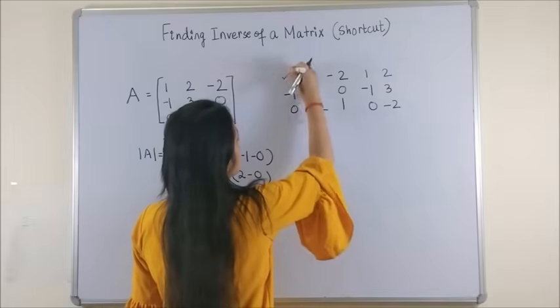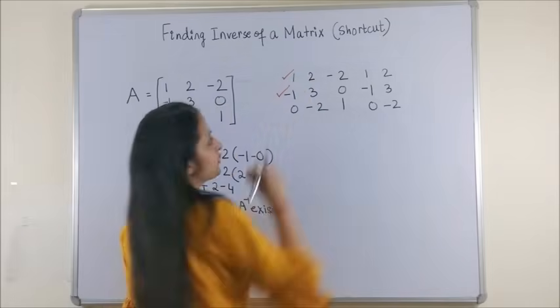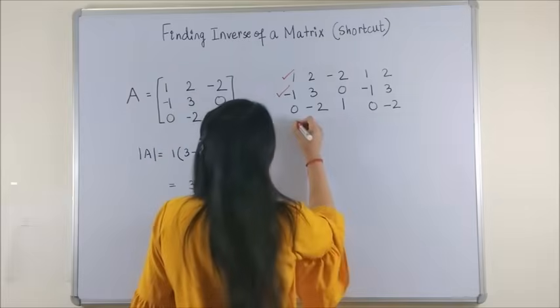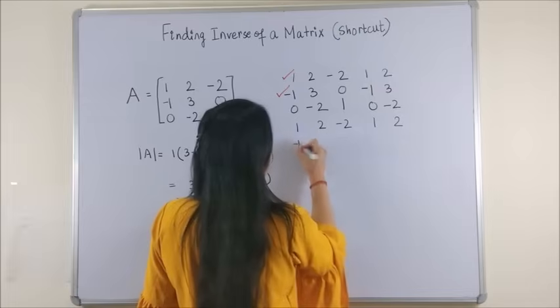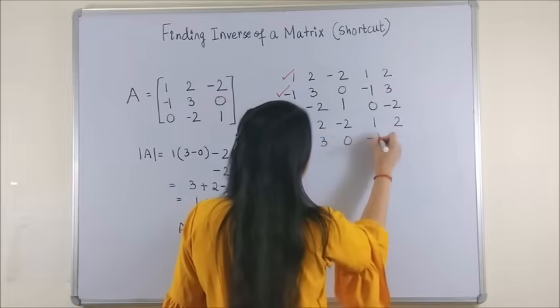Next, just see the row 1 and row 2 and copy them down as they are. So 1, 2, minus 2, 1, 2, minus 1, 3, 0, minus 1, 3.